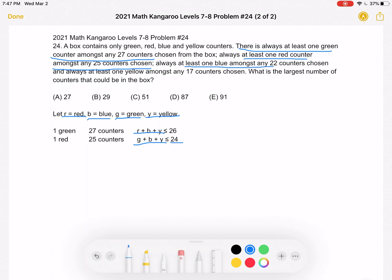Then we have one blue among any 22 counters, so one blue, 22 counters. Everything that's not blue, so green plus red plus yellow, should be less than 21.